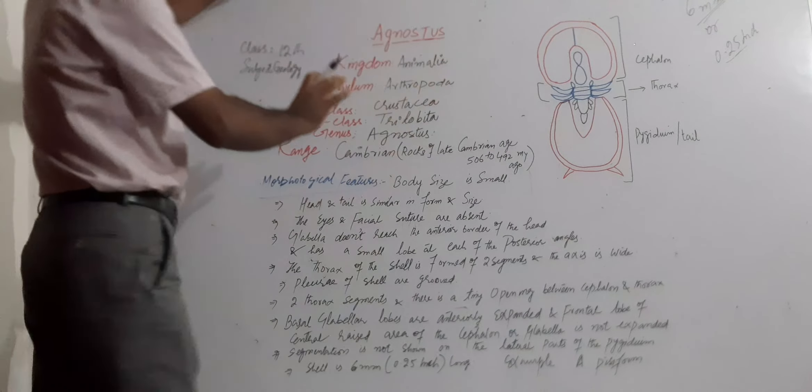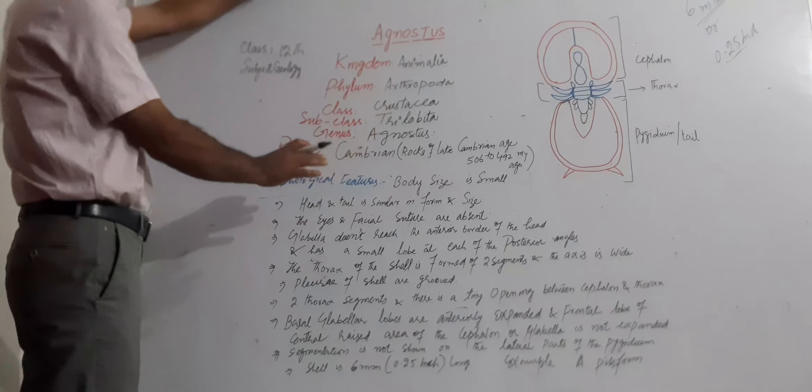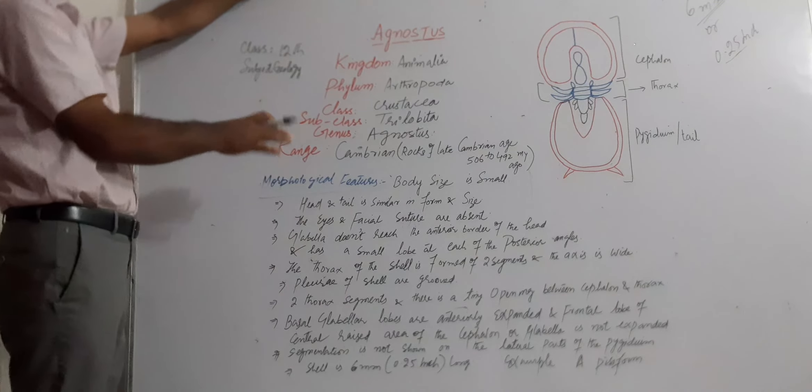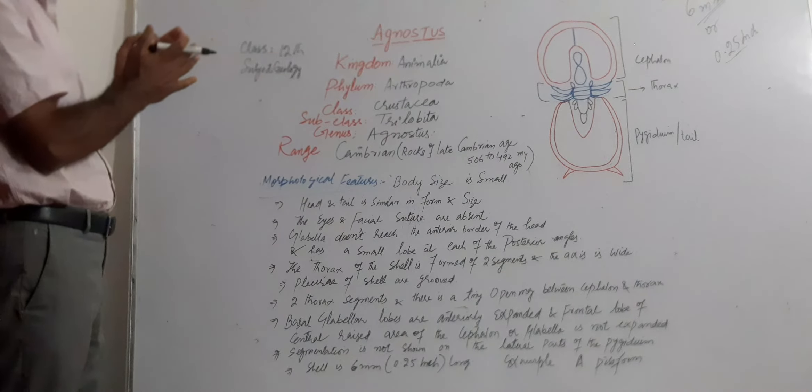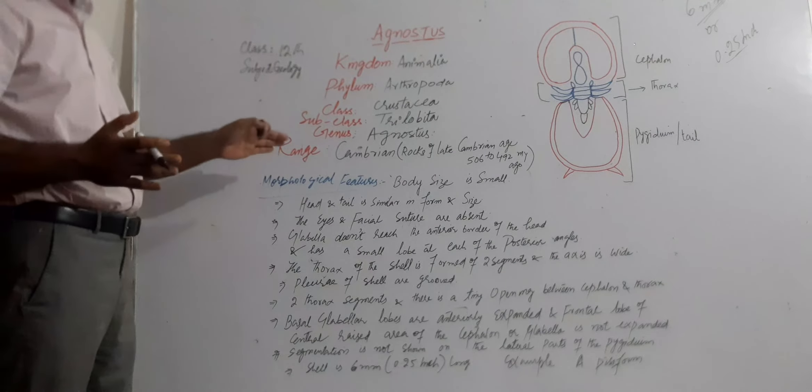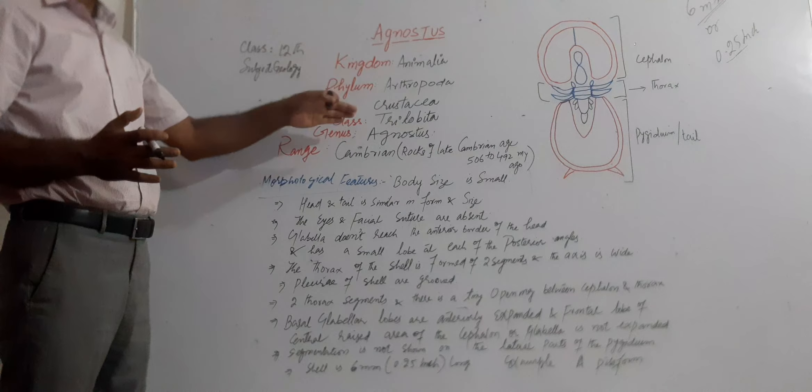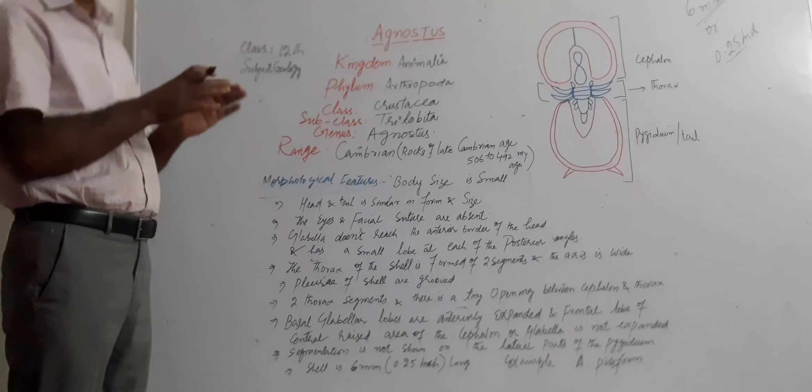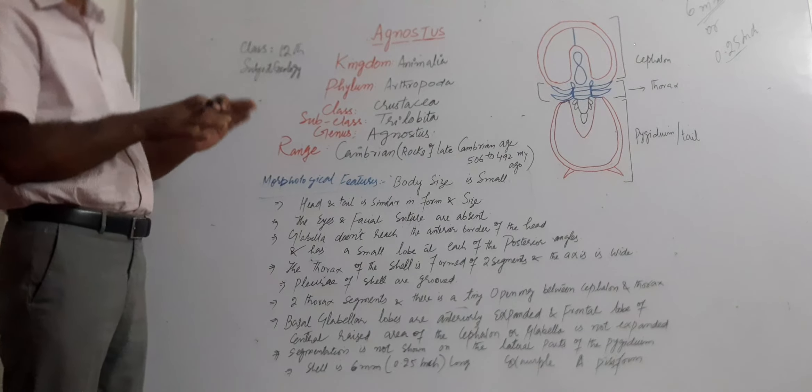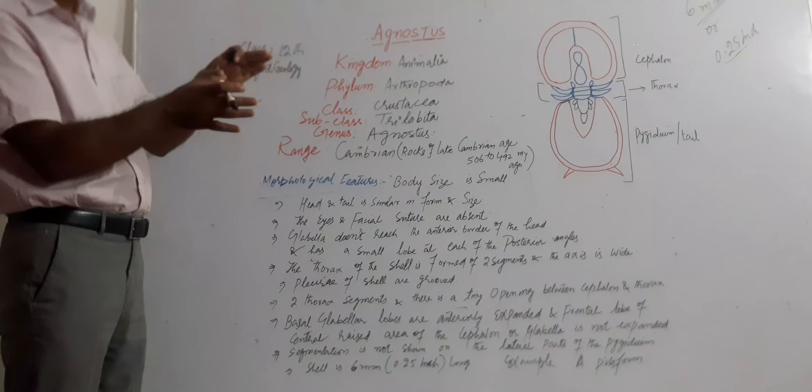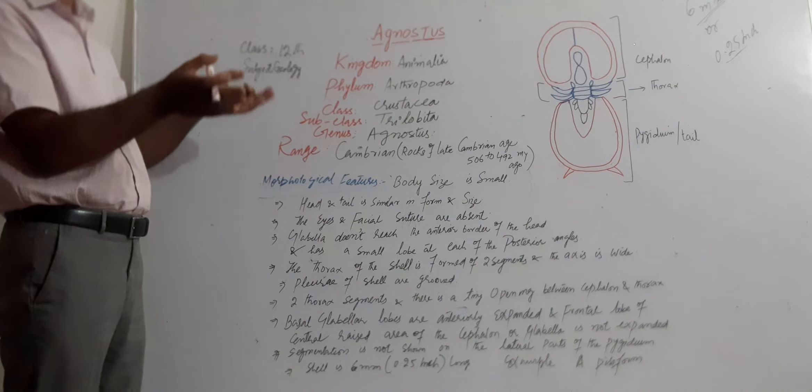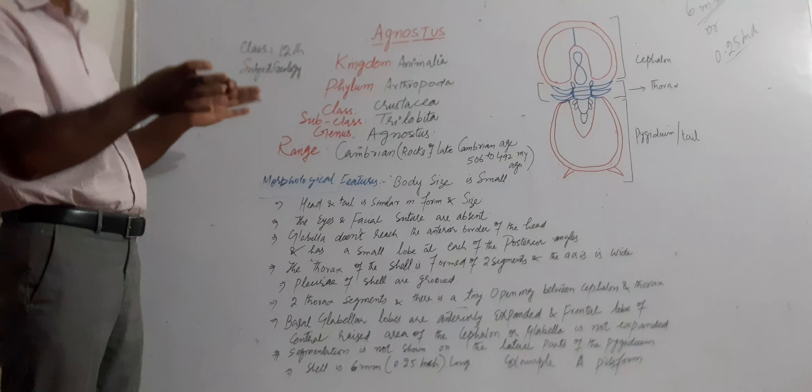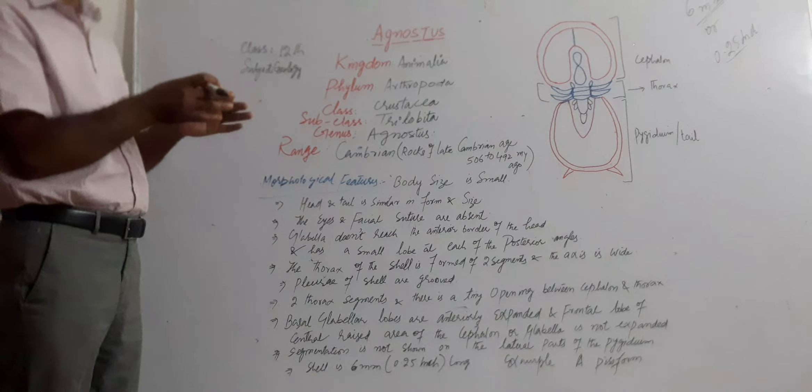Because this shell is completely different. This Agnostis is such a shell in subclass Trilobita that is very different from the other shells, in which the head and tail are alike in size and form, and the thorax has two segments, which makes it different.